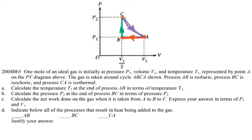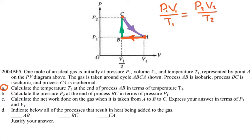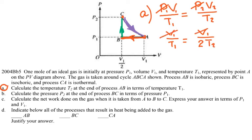Part A: Calculate the temperature T2 at the end of process AB. Because it's constant pressure, we use P1V1/T1 = P2V2/T2. Since pressure is the same at A and B, the P terms cancel. V1 is given, V2 is one half of V1, so T2 equals T1 over 2.